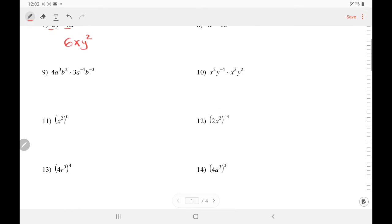Number 9: Multiply the coefficients, 4 and 3, to get 12. And let's work these alphabetically. Add the exponents of A: 3 plus negative 4 is negative 1. And add the exponents of B: 2 plus negative 3 is negative 1.